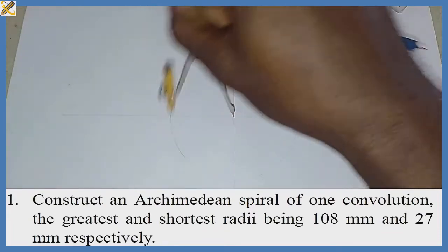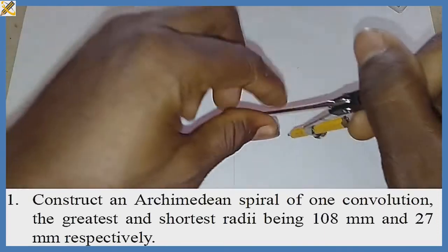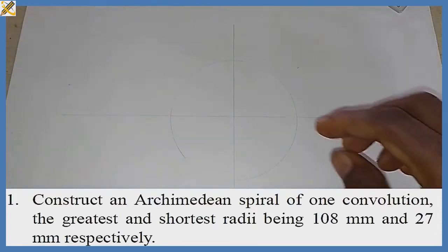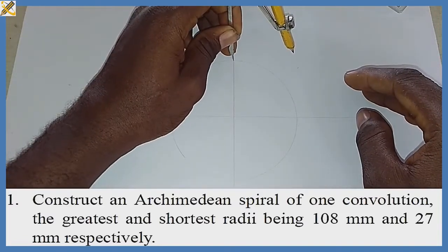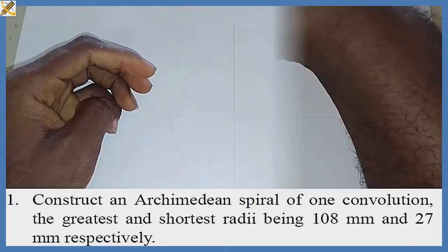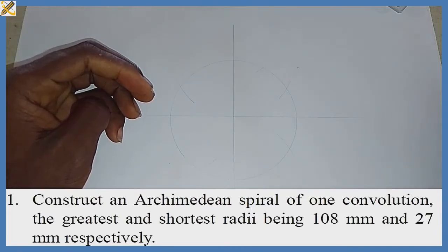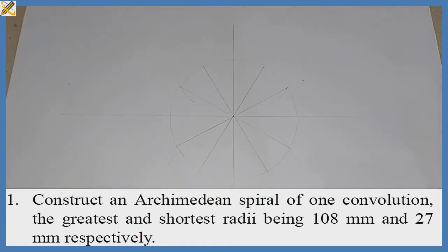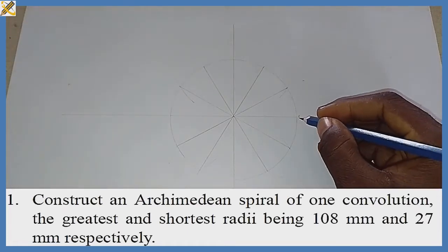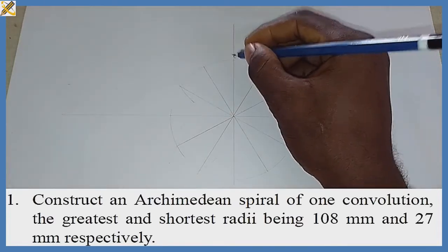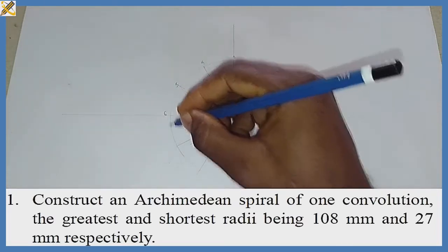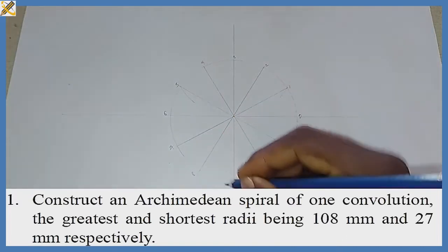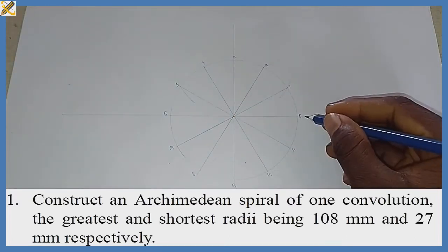The next procedure is to divide this circle into 12 equal halves. Kindly check the link in the description below to watch how to divide a circle into 12 halves. After dividing the circle into 12 halves, the next step is numbering: mark 0, 1, 2, 3, 4, 5, 6, 7, 8, 9, 10, 11, then 0 over 12.